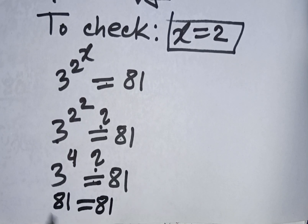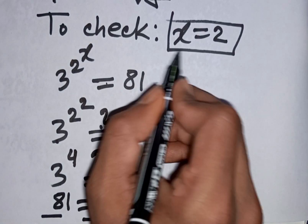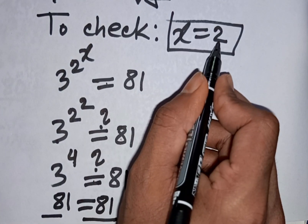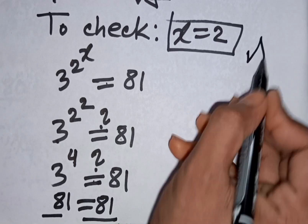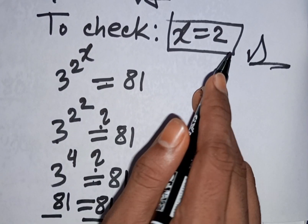So 81 is equal to 81. The left side equals the right side, so our answer x is equal to 2 is correct and justified.